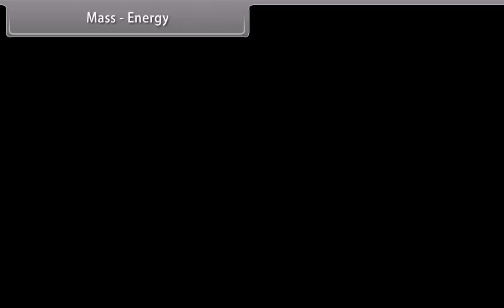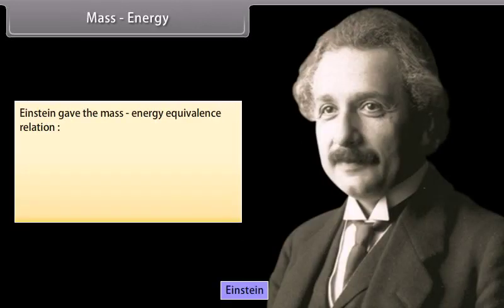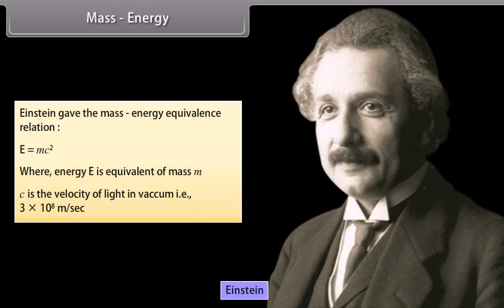Mass energy. Einstein gave the mass energy equivalence relation E is equal to mc², where energy E is equivalent of mass M. C is the velocity of light in vacuum, that is 3 × 10⁸ meter per second.